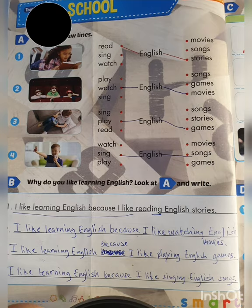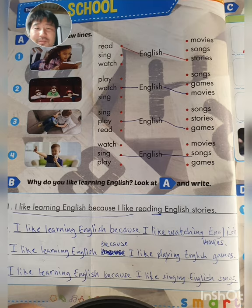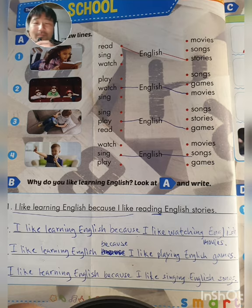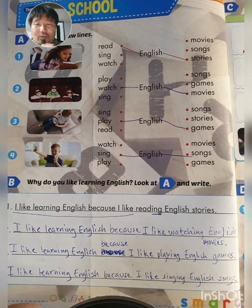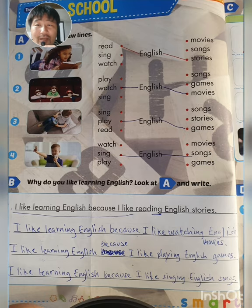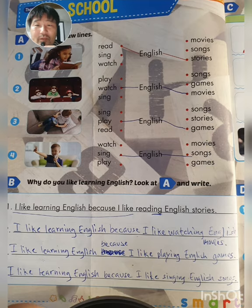This is for your parents out there. You can help your children, and when they have finished the exercises you can make sure that they are correct. Let's start with page number 10 - match the words: read English stories, watch English movies, play English games, sing English songs. And then exercise B.